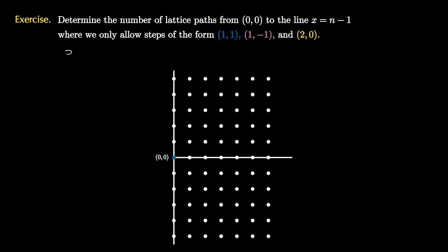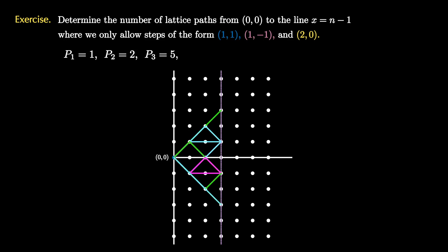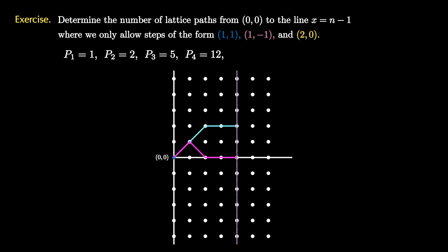For example, if the line is x equals 0, then p1 equals 1 — there's one way to do this. When we have the line x equals 1, so p2, there are two paths from the origin to the line. When n equals 3 and the line is x equals 2, p3 is a total of 5 paths. When the line moves to x equals 3, so n equals 4, we get a total of 12 paths, and p4 is 12. Moving the line to x equals 4 gives n equals 5, and p5 equals 29.